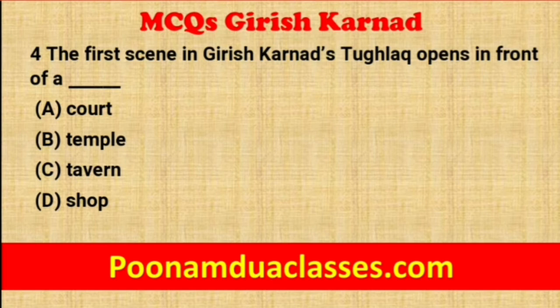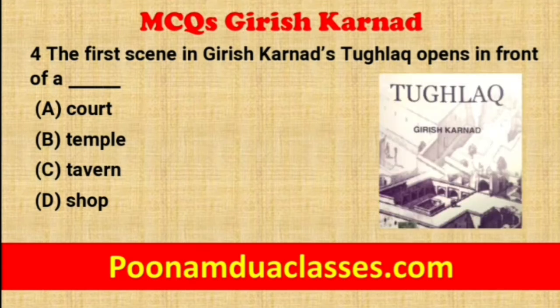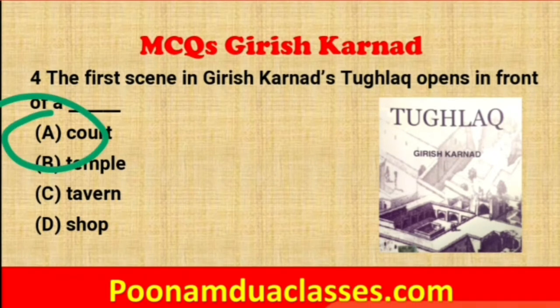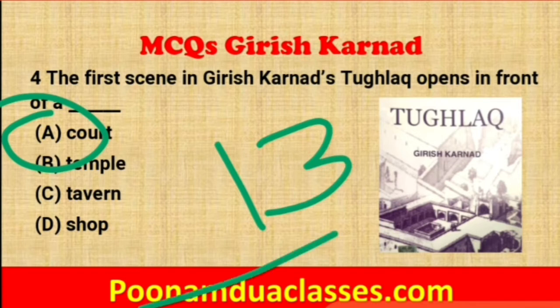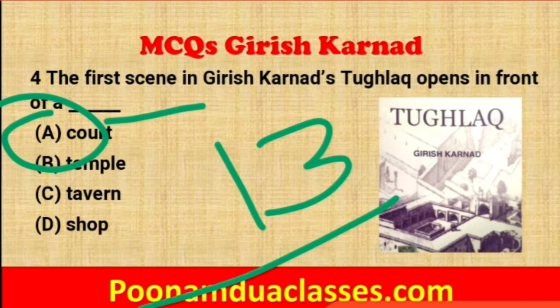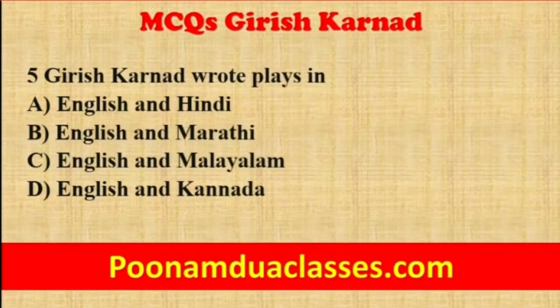Question number four: the first scene in Girish Karnad's Tughlaq opens in front of a court, temple, tavern, or shop? The correct answer is option A — court. Tughlaq is a 13-scene play written by Girish Karnad focusing on the 14th-century Turkish-Indian ruler Muhammad bin Tughlaq. It is both a historical play and a commentary on contemporary politics of the 1960s. As the play opens, readers are introduced to the court of Muhammad bin Tughlaq, where in the first scene he declares he is shifting his capital from Delhi to Daulatabad.